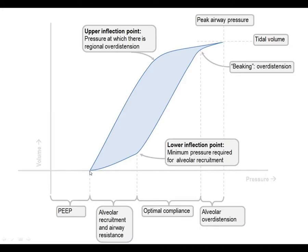Here is the lung pressure-volume curve. Pressure is on the X-axis and volume on the Y-axis. As I apply pressure, I should see an increase in volume. Here is inspiration going up, and then expiration. As I apply pressure at the lower end, we're forcing some collapsed segments to open up, and once they're open, it gets easy to ventilate. We're on easy street up until a certain point. As we keep applying pressure past that point, we see an increase in pressure with very little increase in volume — that's over-distension or stretch injury of good lung tissue.